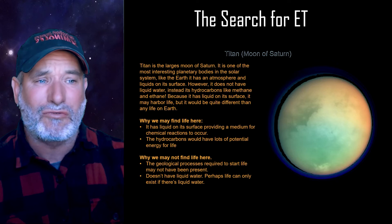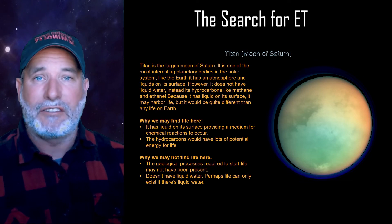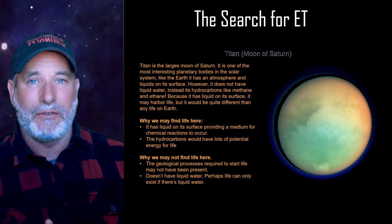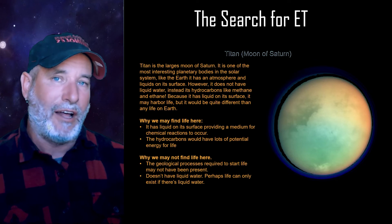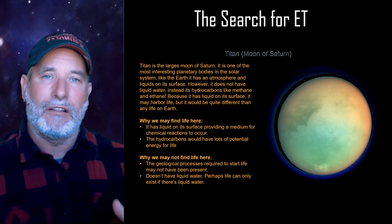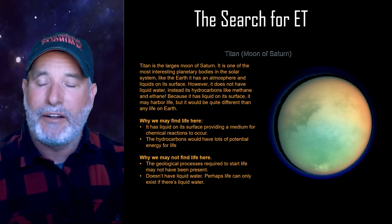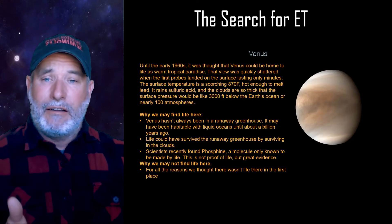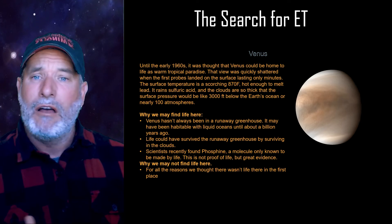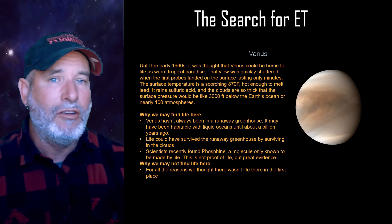One of the strangest places in the solar system is Titan, Saturn's large moon. It has an atmosphere, with lakes, rivers, and rain — but not water. It rains liquid hydrocarbons like methane and ethane on its surface. Liquid is very good for the chemistry of life, but there's no liquid water. If we found life on the surface of Titan, it could be a game changer in how we think life may exist in the universe. And Venus — there are some people who think we might have life there, in water vapor in the clouds, as a molecule known to be made by living organisms was detected.